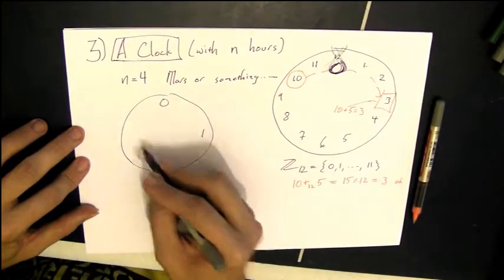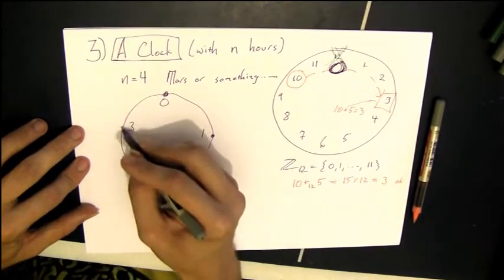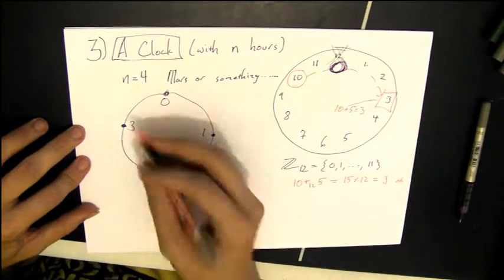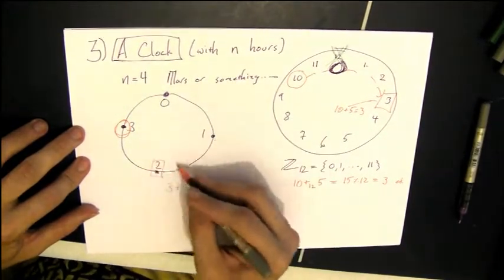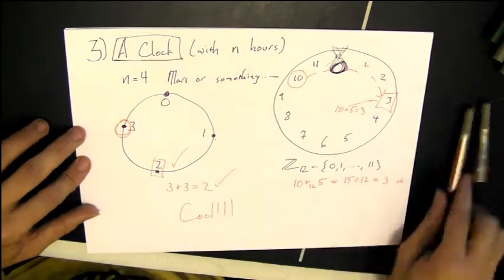Likewise, if you're on like Mars or someplace else that rotates really fast, maybe your clock only has 4 hours on it. You can do something like 3 plus 3. You wait 3 hours from 3 o'clock, and suddenly it's 2.